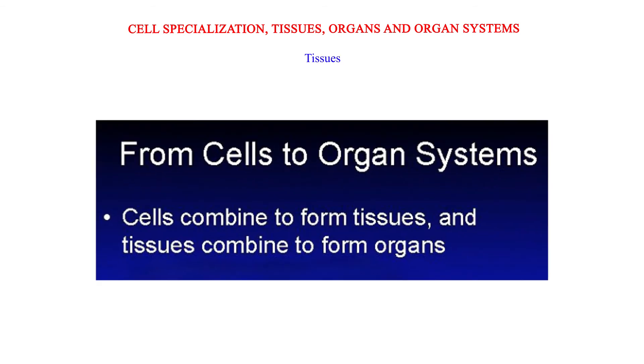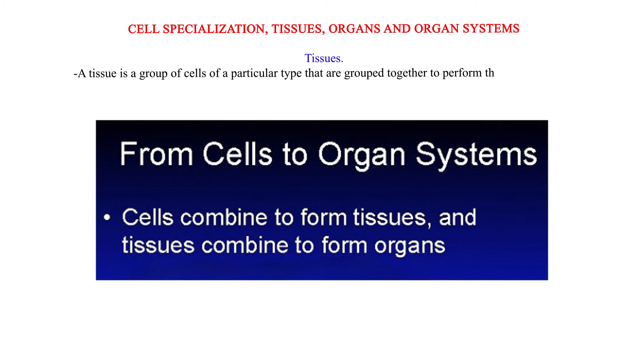Cell Specialization, Tissues, Organs, and Organ Systems. A tissue is a group of cells of a particular type that are grouped together to perform the same function.